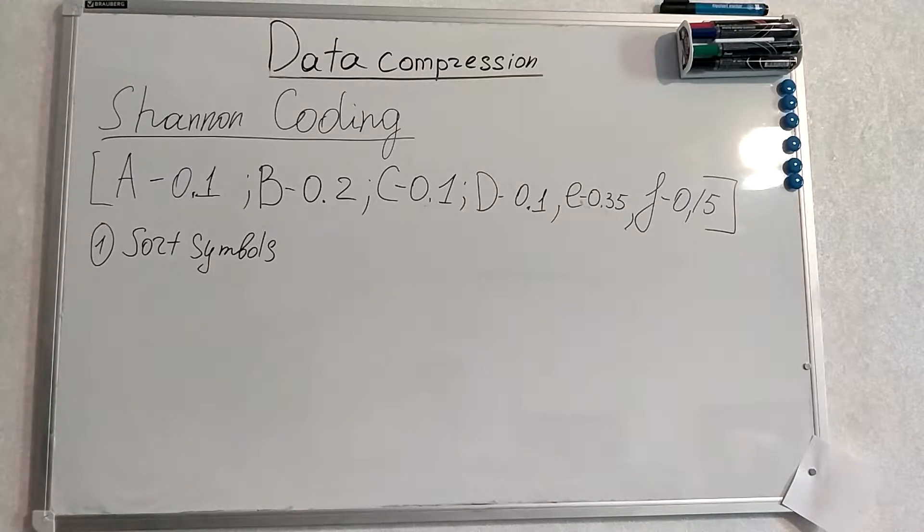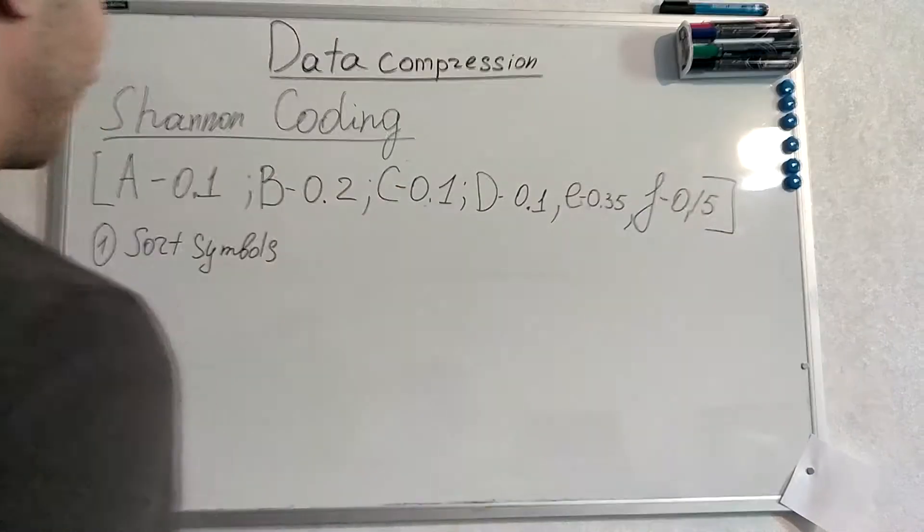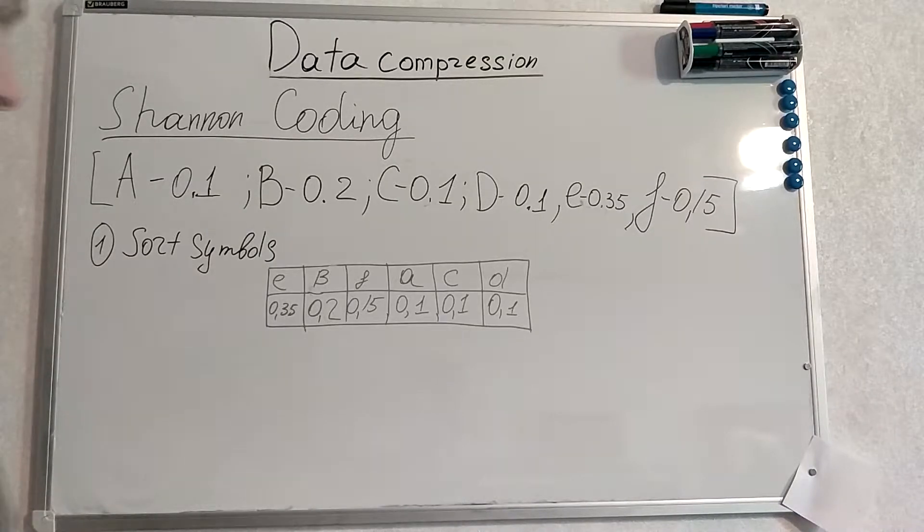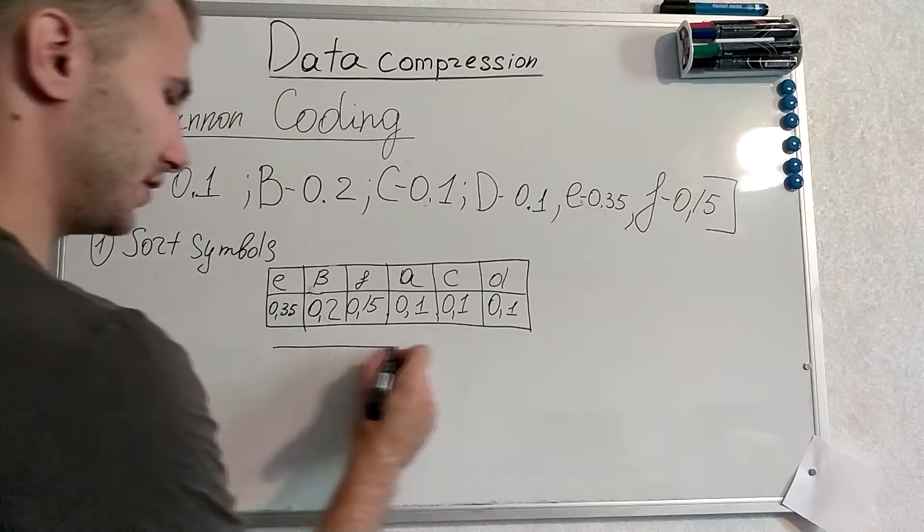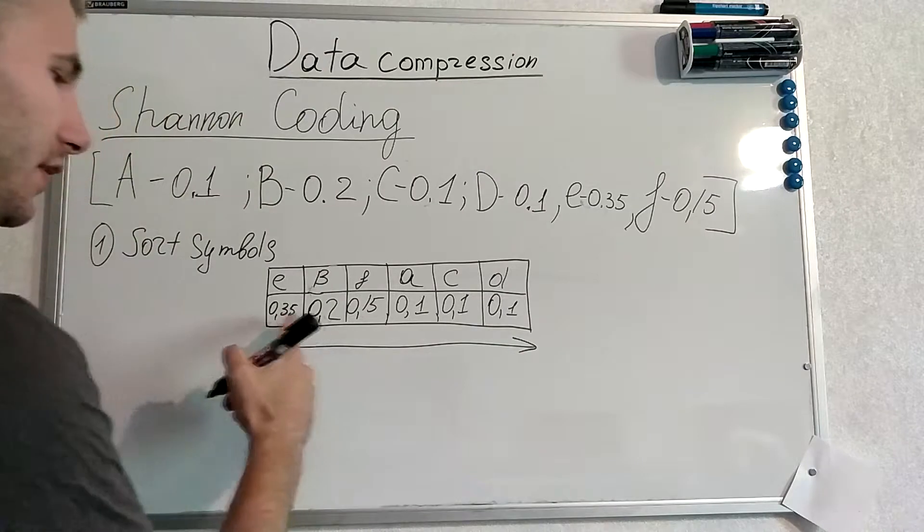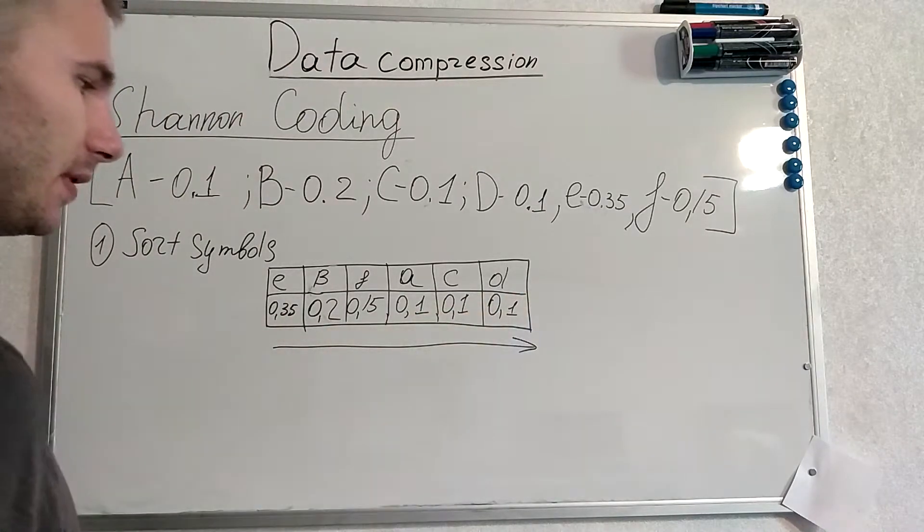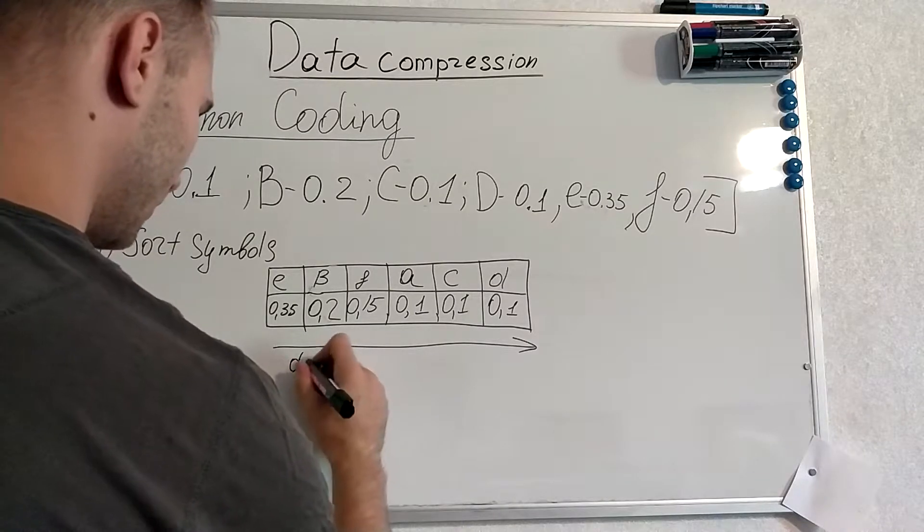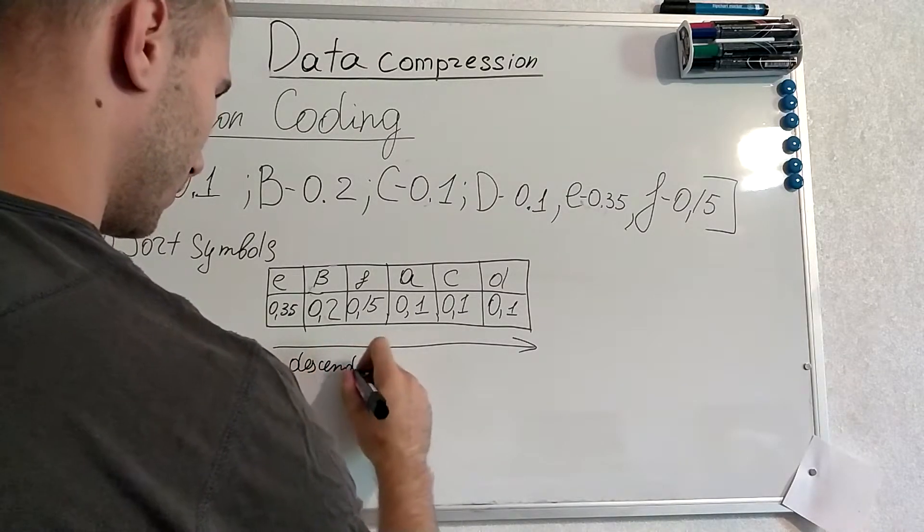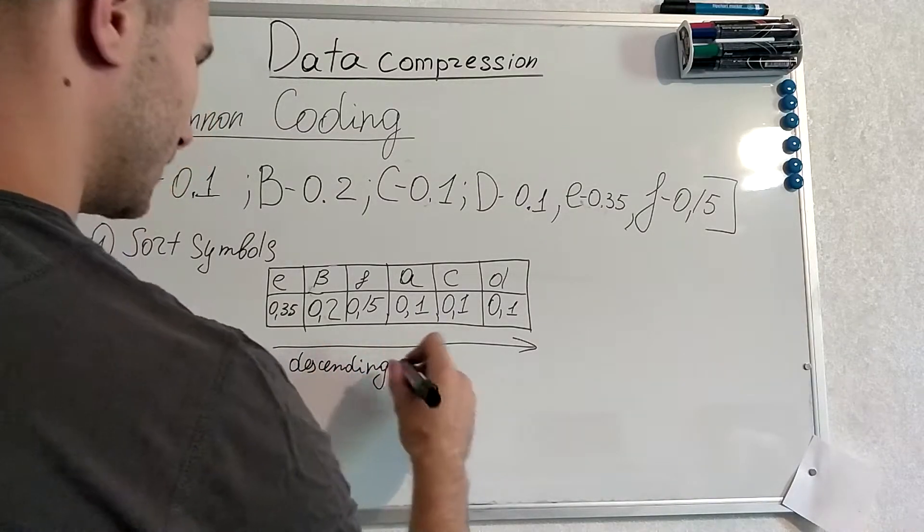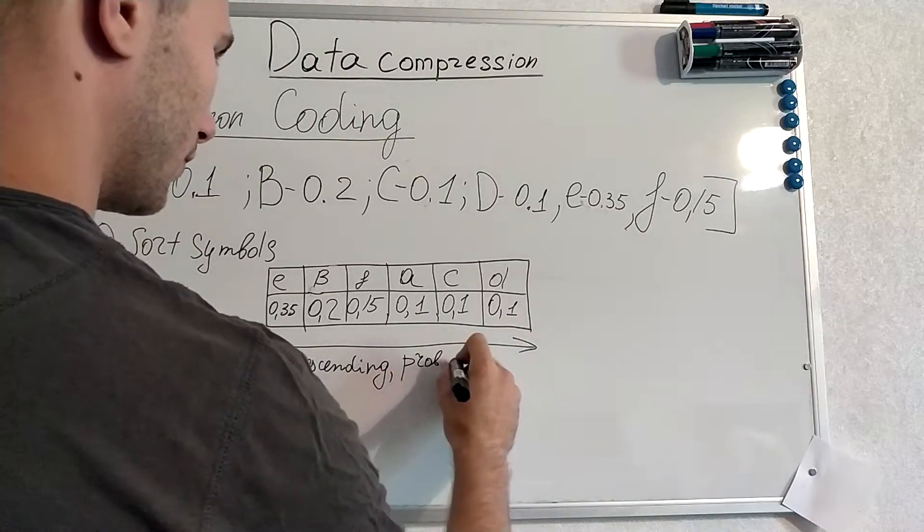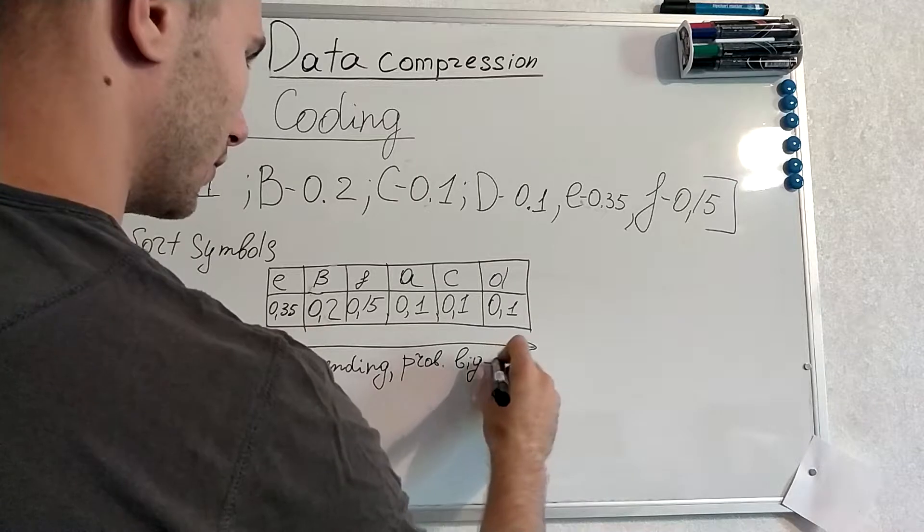In Shannon Coding we have symbols with their probabilities and the first step is to sort symbols by their probabilities in descending order. If symbols have the same probability they are sorted alphabetically. So descending probability from big to small.